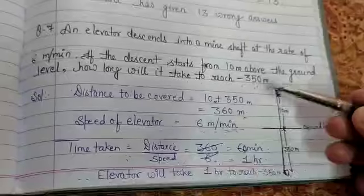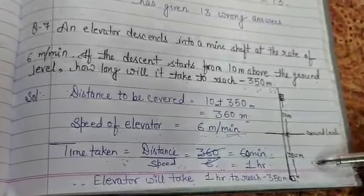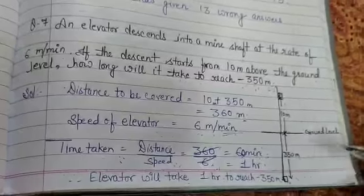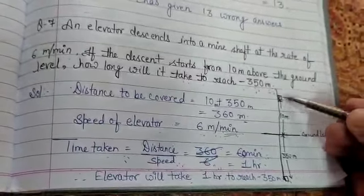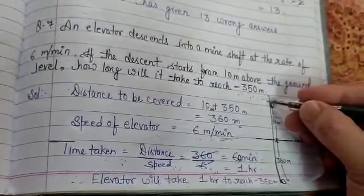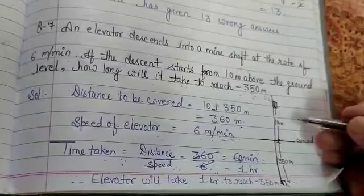So here, the minus sign shows you that the elevator has to go below the ground level. You can understand this with the help of this diagram. Here is the ground level. This elevator has to start from 10 meters above the ground level. Here is the elevator. Elevator is a kind of lift, you can say. It has to go to the mine shaft.